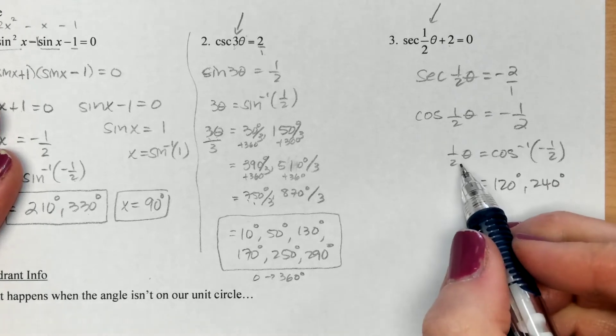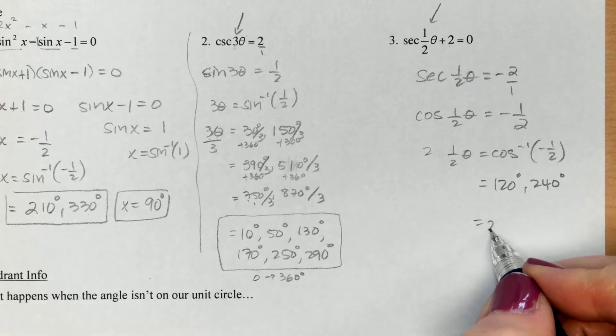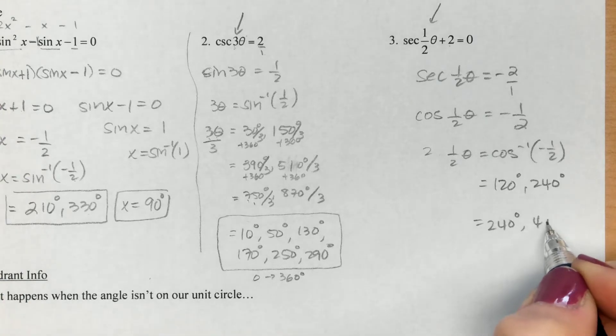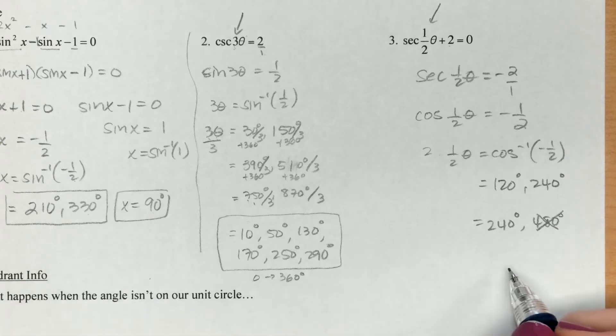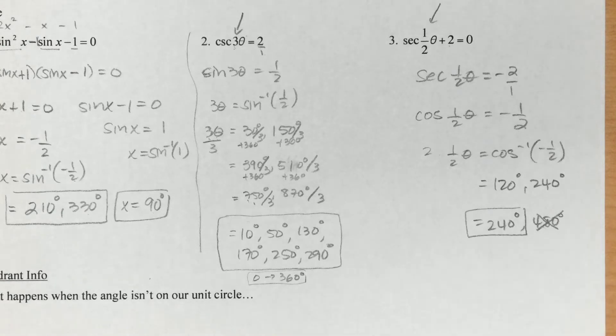If you were to say, but now in order to solve for theta, I would need to multiply by two, I would say you're right. Let's multiply by two. This would end up being 240. This would end up being 480, and that's outside of our one circle rotation. We want all our answers to be from zero to 360, so get rid of that one. That's my only possibility, which matches what we thought was going to happen when we thought there would be half as many answers. We only had one answer as opposed to our normal two answers.